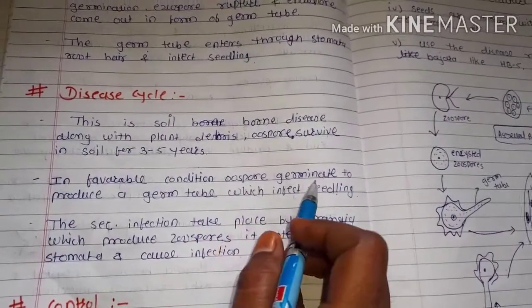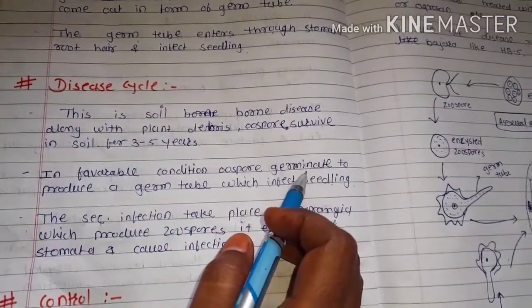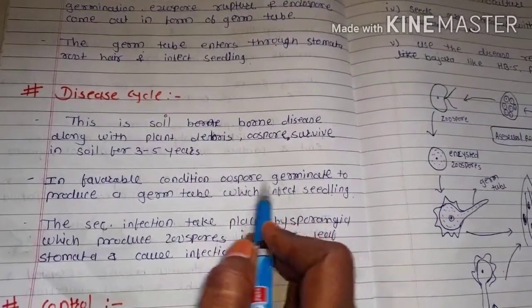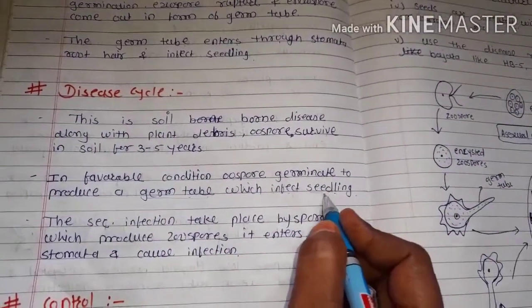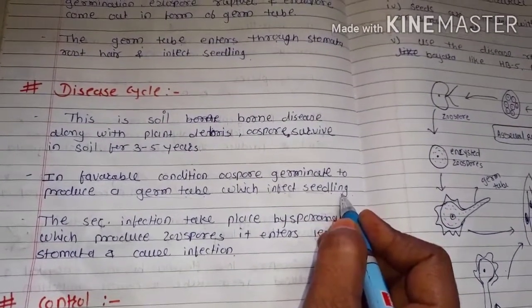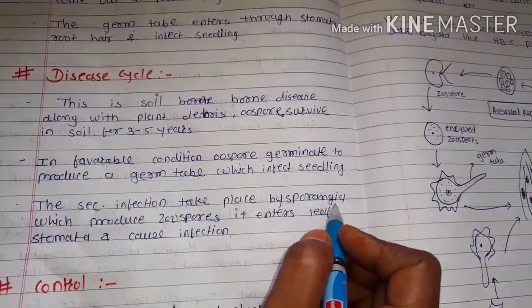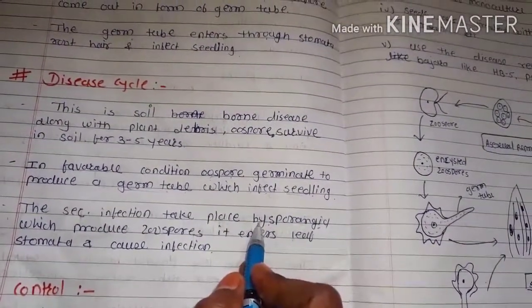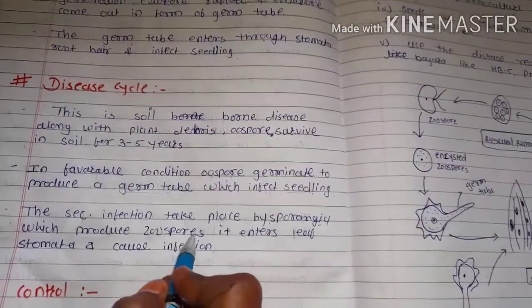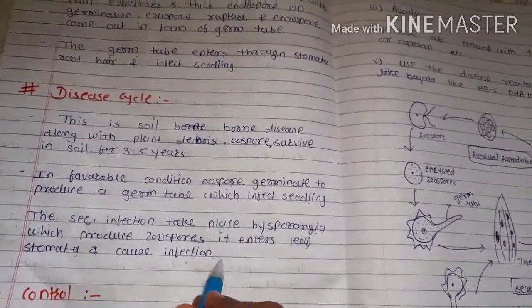The oospore germinates to produce a germ tube, which infects the seedling. The seedling is the juvenile stage of Bajra and is mostly affected. Secondary infection takes place by the sporangia. The first infection occurs with the help of the oospore, and secondary infection is by the sporangia, which produces the oospore, meaning the sexual life cycle is completed. The spore enters the leaf stomata and causes infection.